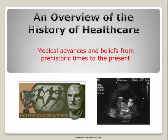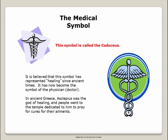This is an overview of the history of health care. It covers medical advances and beliefs from prehistoric times to the present. The Medical Symbol, called the Caduceus, is believed to have represented healing since ancient times. It has now become the symbol of the physician or doctor.